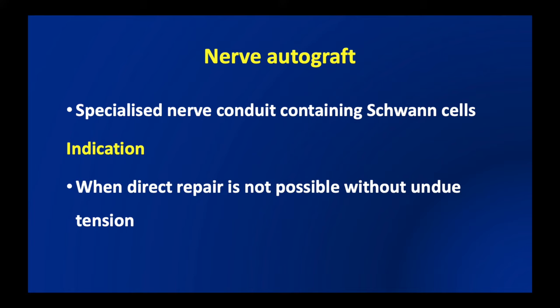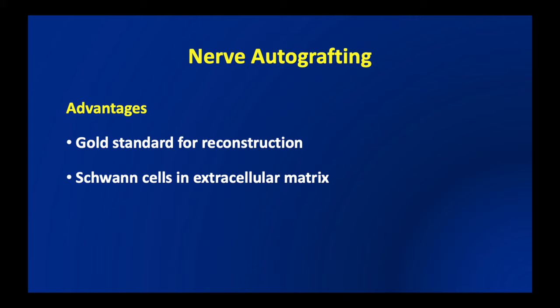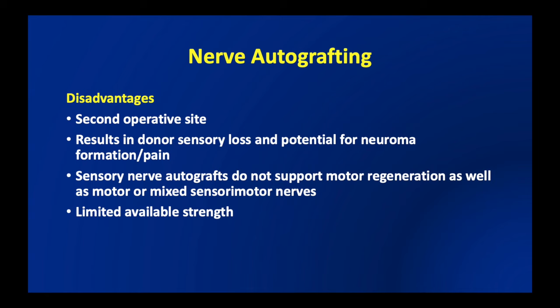The nerve autograft is harvested from the same patient and is a specialized nerve conduit containing Schwann cells. The indication is when direct repair is not possible without undue tension. The advantages are that it forms the gold standard of reconstruction because Schwann cells available in the extracellular matrix play a big role in axonal regeneration from the proximal end. However, disadvantages include the need for a second operative site, donor sensory loss, potential for neuroma formation or pain, the fact that sensory nerve autografts do not support motor regeneration as well as motor or mixed nerves, and limited availability of autografts.